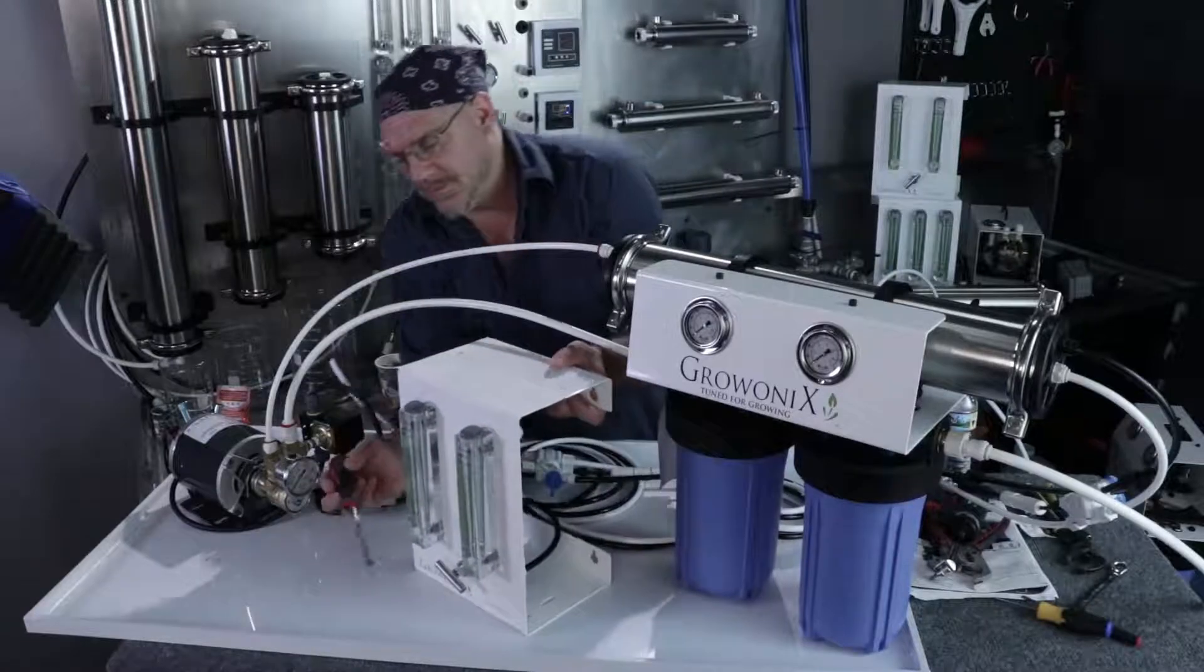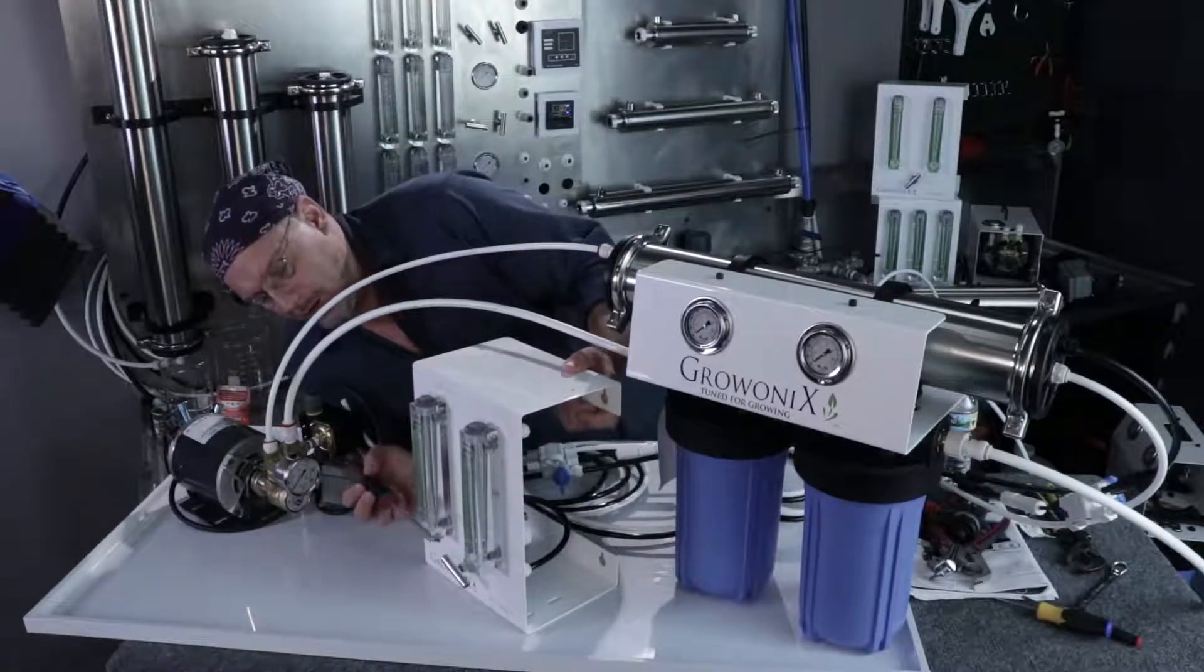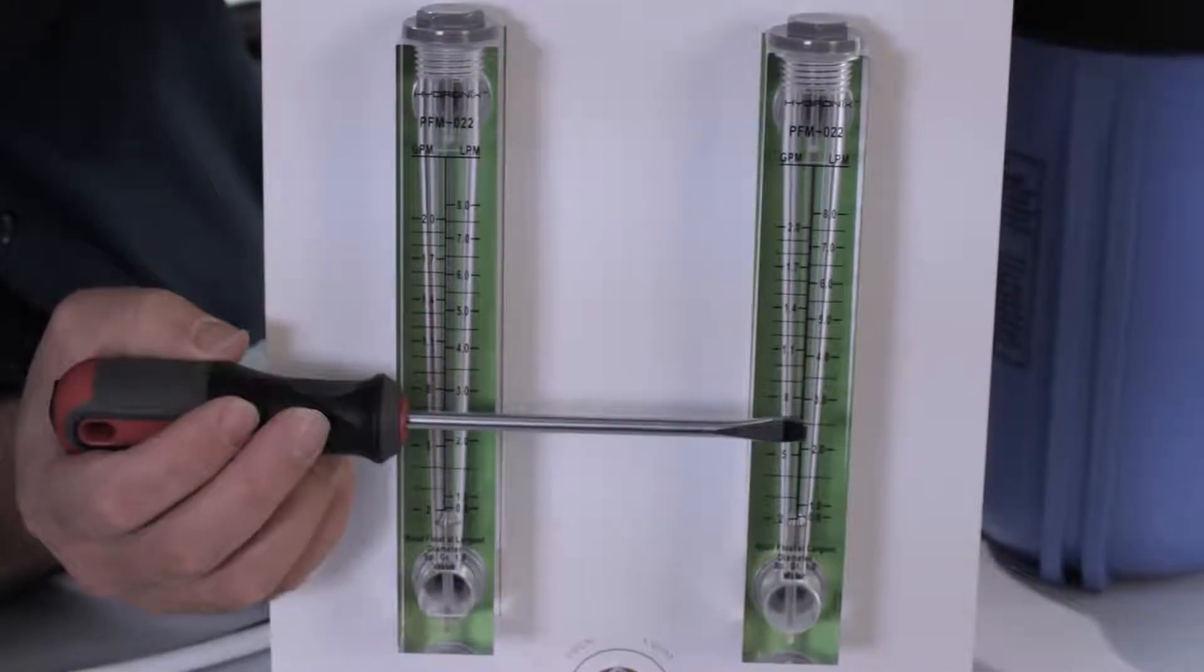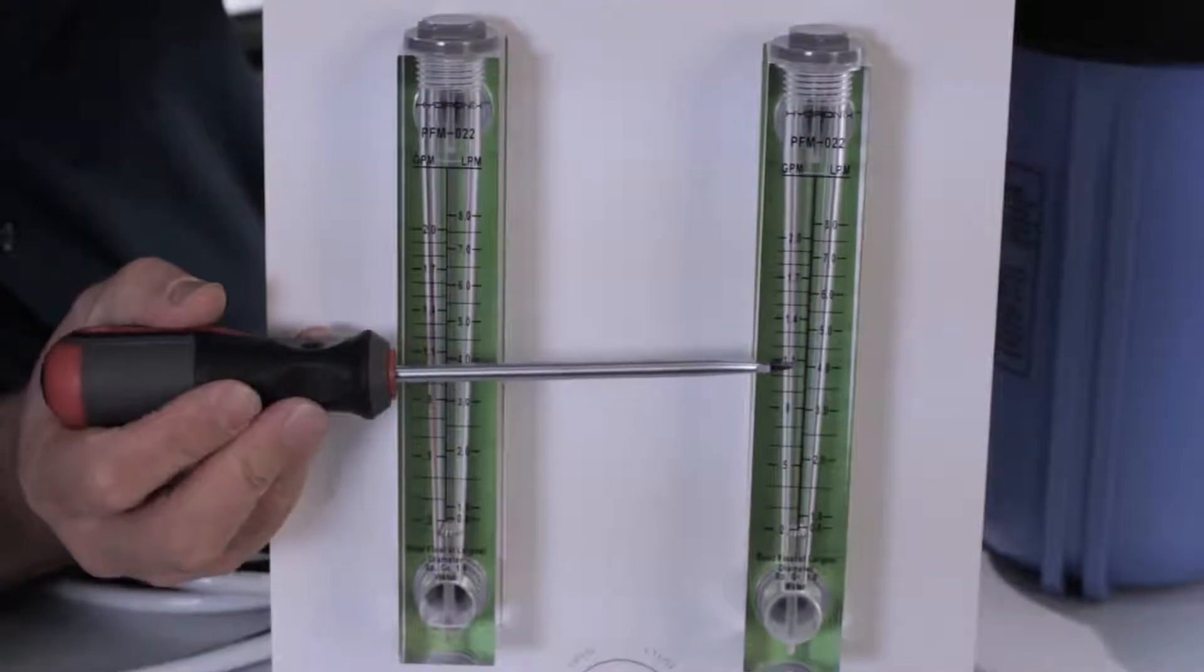On a Flowbox, when the drain water equals the amount of feed water, then you're at one-to-one. That's the system ratio.